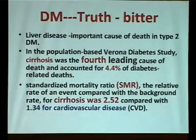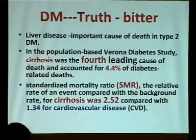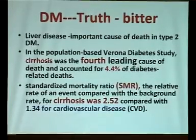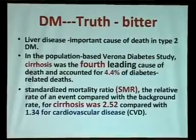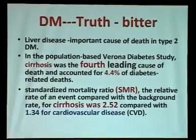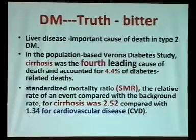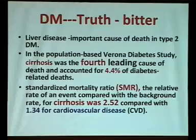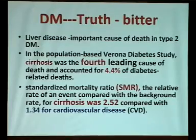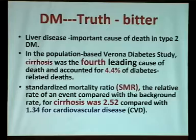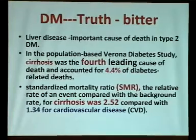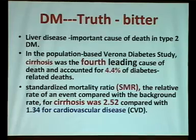Liver disease is the most important cause of death in type 2 diabetes. In the population-based Verona Diabetes Study, cirrhosis was the fourth leading cause of death and accounted for 4.4% of diabetes-related deaths. The standardized mortality ratio shows that patients with cirrhosis and diabetes have higher mortality than patients with cirrhosis and cardiovascular disease — that is the importance of diabetes and liver disease.